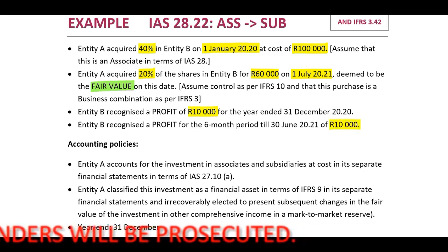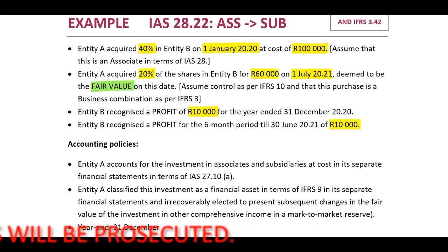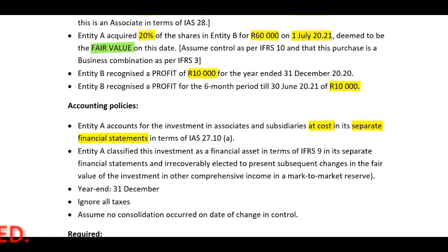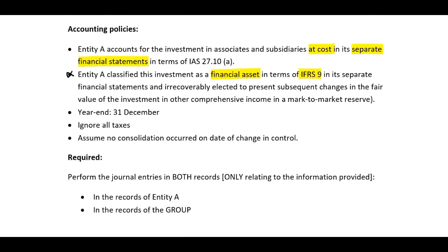Accounting policies. Entity A accounts for the investment in associates and subsidiaries at cost in its separate financial statements in terms of IAS 27 paragraph 10A. Entity A classified this investment as a financial asset in terms of IFRS 9 - not applicable to this scenario. Year end 31 December. Ignore all taxes. Assume no consolidation occurred on date of change in control. Required: Perform the journal entries in both records only relating to the information provided.